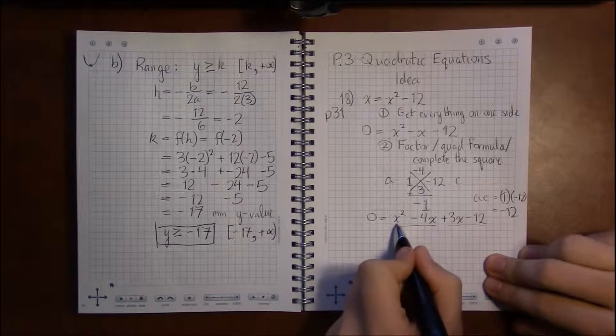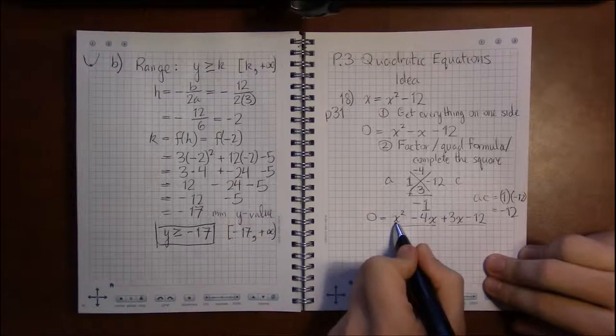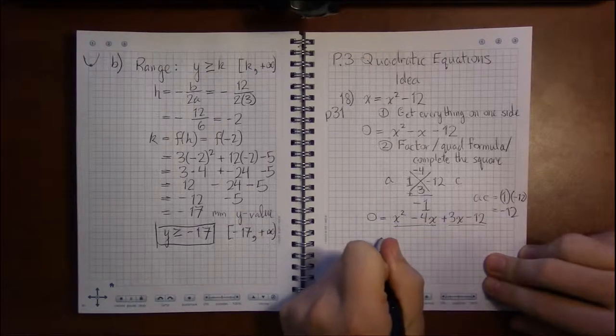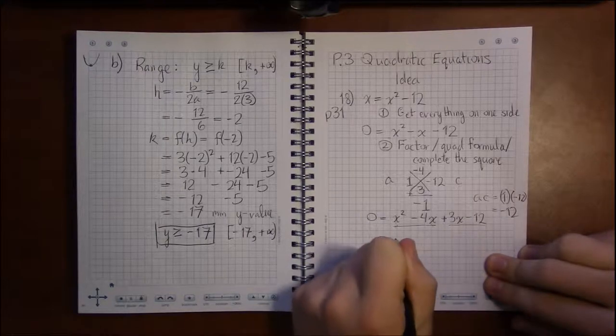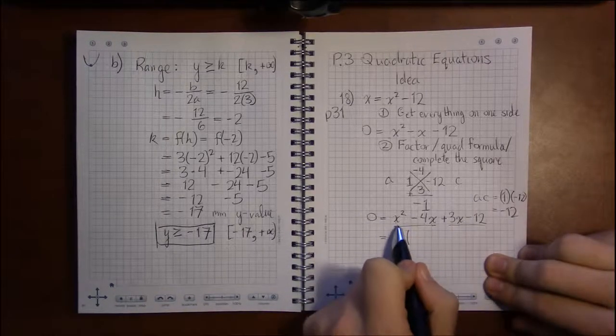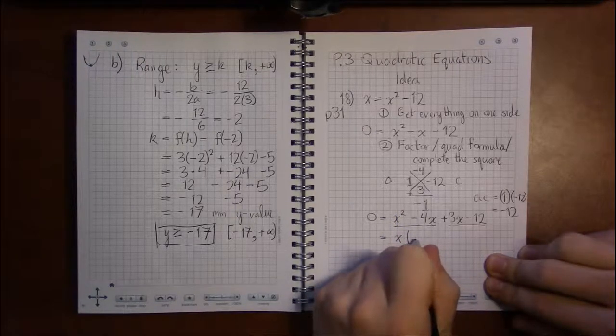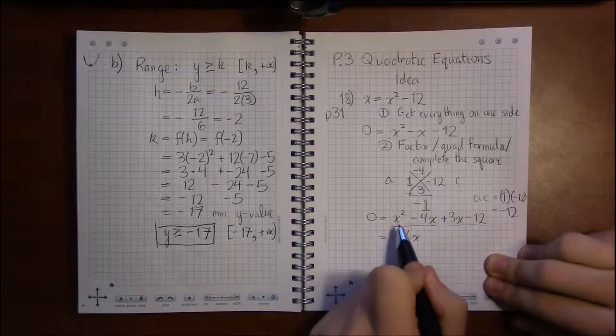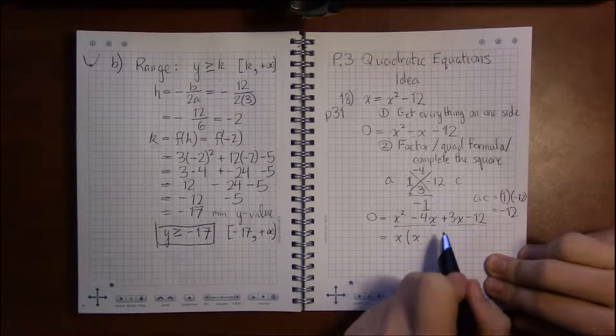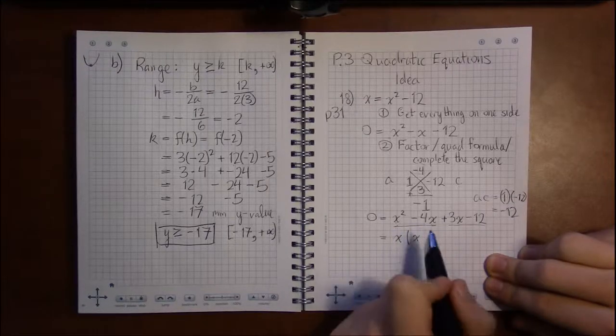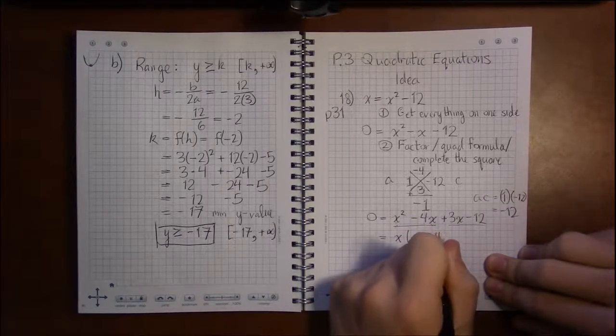What could you factor out or pull out of these two terms? What I see in common: this has two x's multiplied together, this has one x in a multiplication. So if I pull out an x—pulling an x out of this, there are two x's here, so pulling one x out leaves me with one x left over. Over here I've got minus 4x; pulling an x out leaves me with the minus 4.